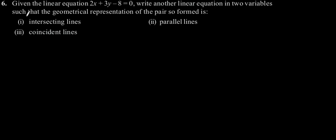Exercise 3.2, question number 6. Given the linear equation 2x plus 3y minus 8 is equal to 0, write another linear equation in two variables such that the geometrical representation of the pair so formed is: first, intersecting lines.